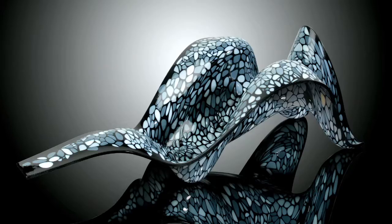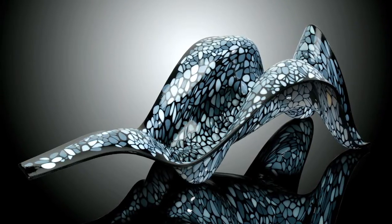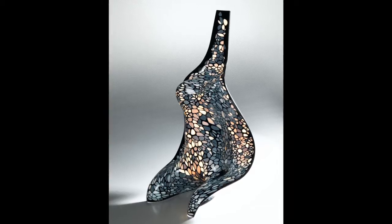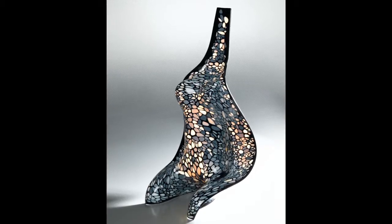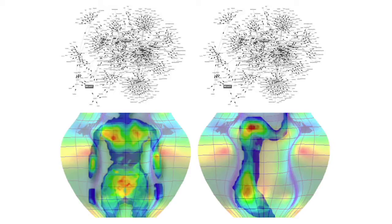Previous design work at the Mediated Matter group focused on designing products that are inspired by those natural processes. Beast, for example, is a chaise lounge that supports the human body by varying the stiffness ratios of the materials from which it's 3D printed as a function of the load that's introduced to the chaise.